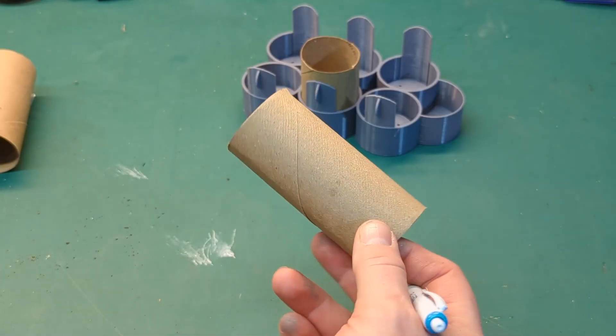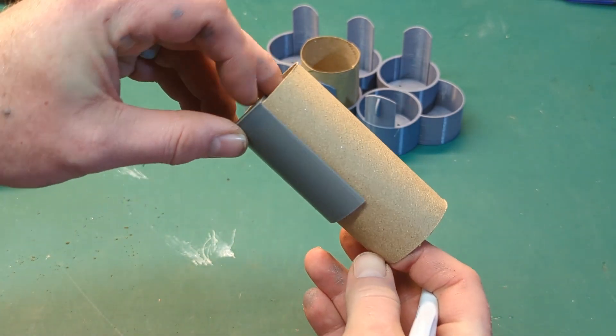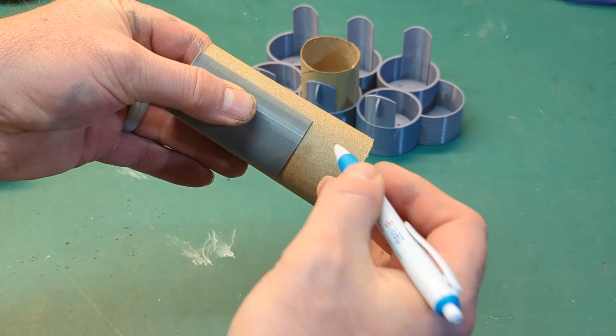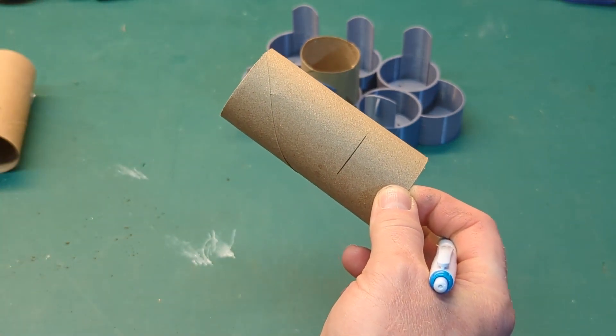The toilet paper tube itself does seem to be a little bit long so I have this guide that allows me to slip the tube down inside it and then I can take a pen and make my mark. Then when I cut the tubes all of my tubes are the exact same length.